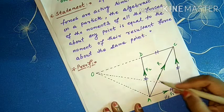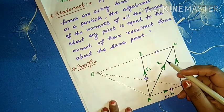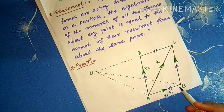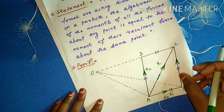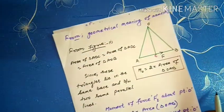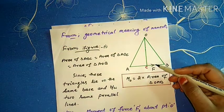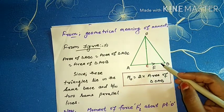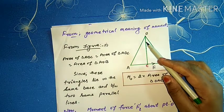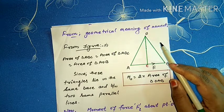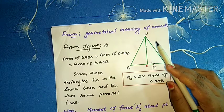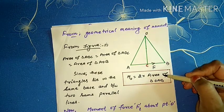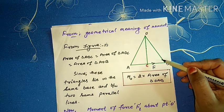We join the diagonal AC, which gives the resultant R of the two forces F1 and F2. That is, diagonal AC gives the resultant R of F1 and F2. Now join OA and OB. From the geometrical meaning of moment, we know that in triangle OAB, if a force F acting on a body is represented by vector AB and O is the point about which the moment is to be calculated, then the moment of the force about point O equals 2 times the area of triangle OAB. The proof of this can be found in my earlier video on the concept of moment.